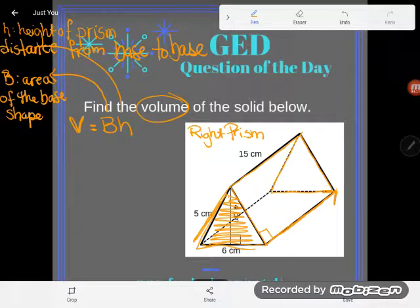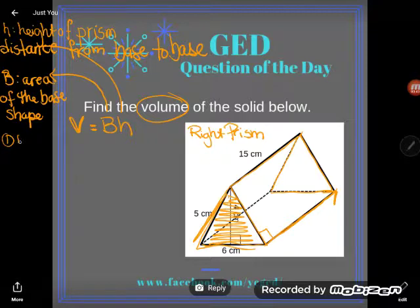What this means, this capital B really means for us, is that we're gonna have a two-step problem. The first thing I'll do is find the area of the base shape, and then once I find the area of the base shape, the big B, I'll plug that into the area formula. So let's do that. Let's come over here and let's find to be the area of the base shape.